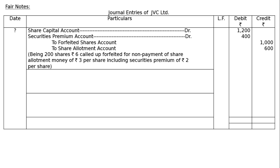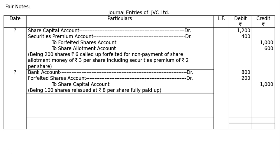Journal entry for reissue of 100 shares at Rs. 8 per share, fully called up. Bank Account debited: 100 × 8 = Rs. 800. Forfeited Shares Account debited: 100 × 2 = Rs. 200 (discount on reissue). To Share Capital Account: 100 × 10 = Rs. 1000. Being 100 shares reissued at Rs. 8 per share, fully paid up, meaning Rs. 10 paid up.